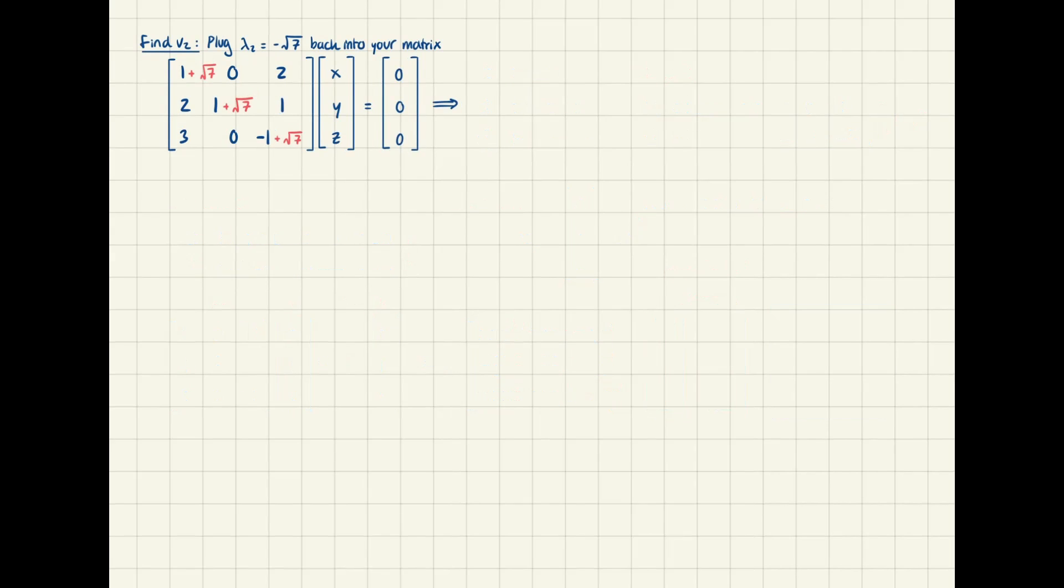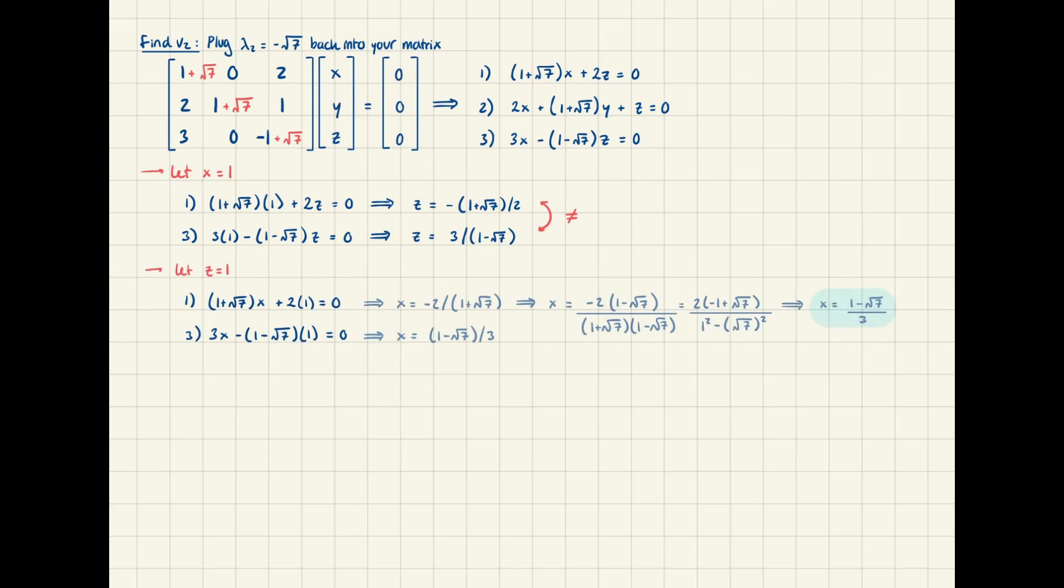For our lambda 2 value, you can just follow the same first steps. Subtract negative root 7, or add positive root 7, along the diagonal, and then write it all out as a system of equations. When we let x equal one, we get two different results for z, so we know that that can't be the real value of x. Letting y equal one is pretty useless because we don't actually have a second expression with y in it to compare it to. So let's set z equal to one and solve it out.